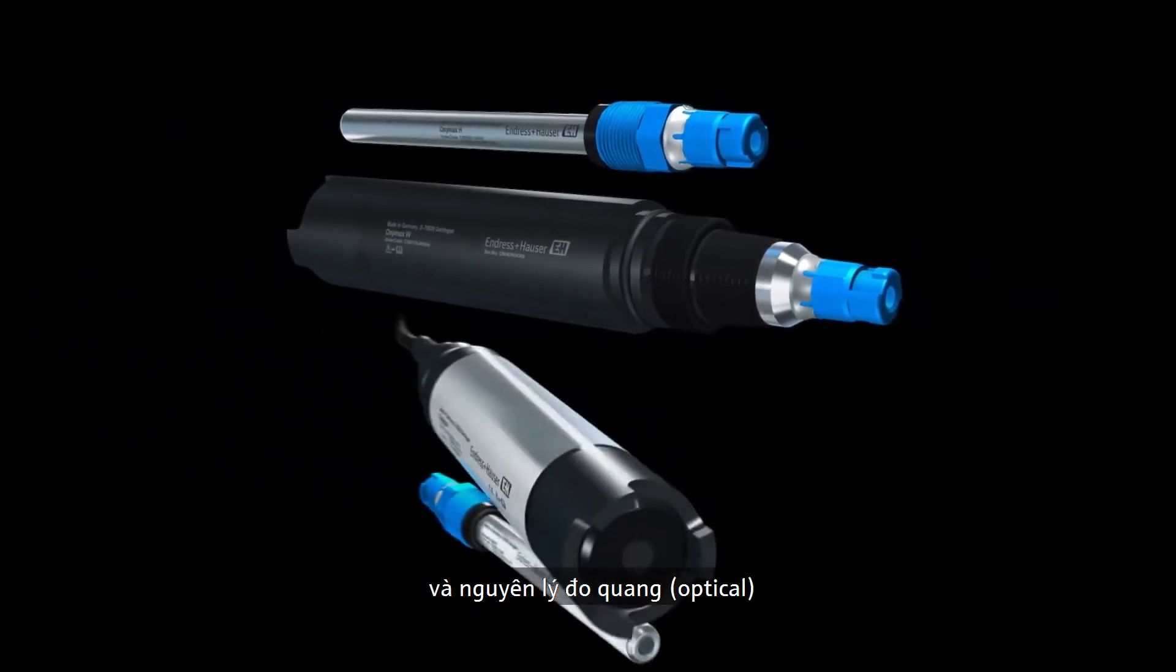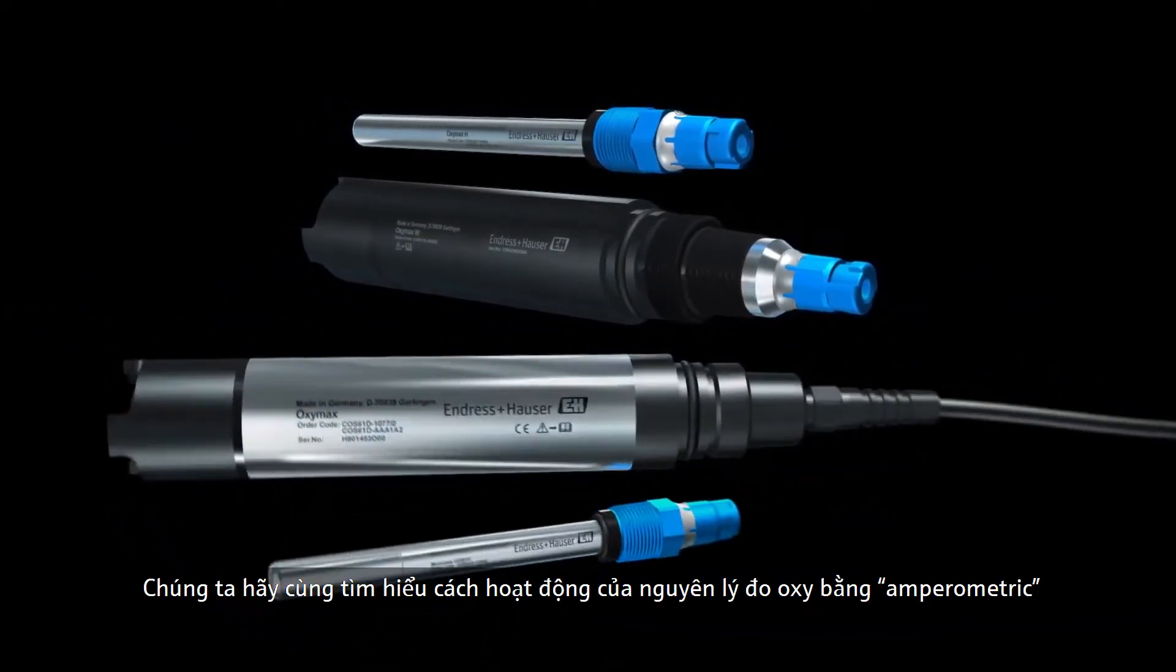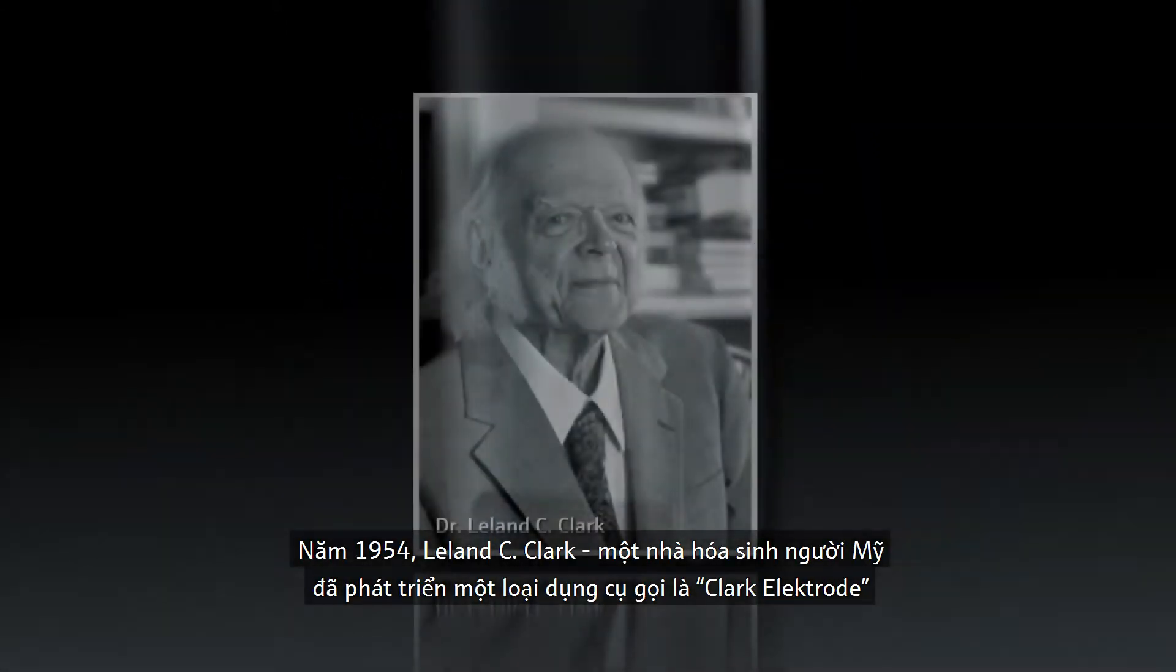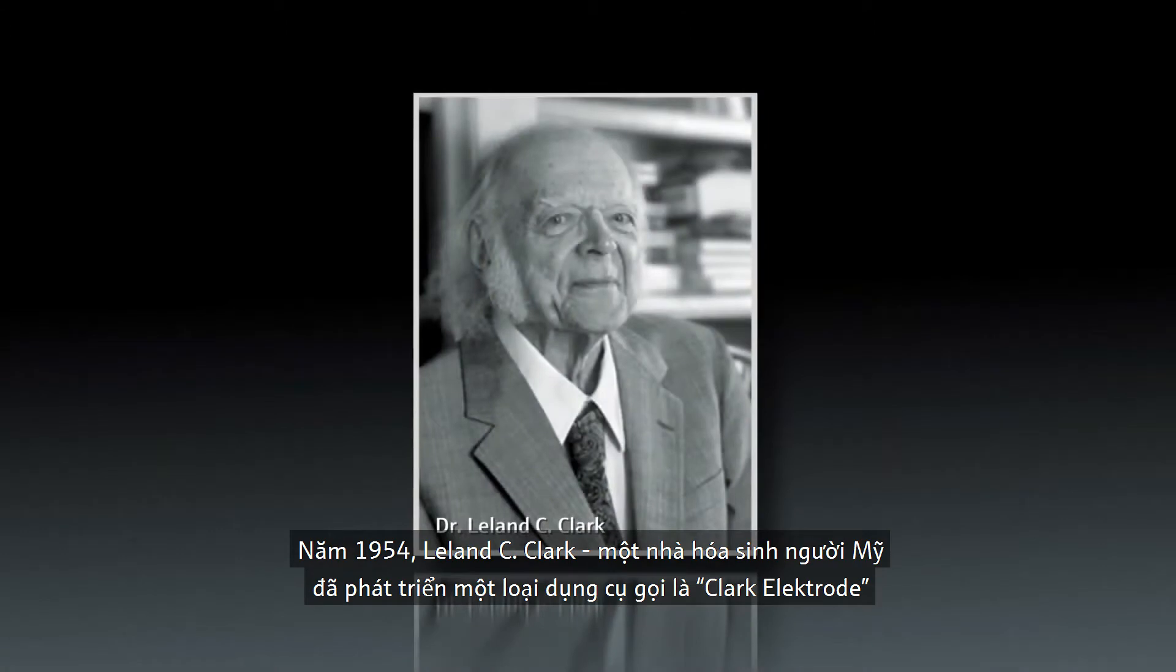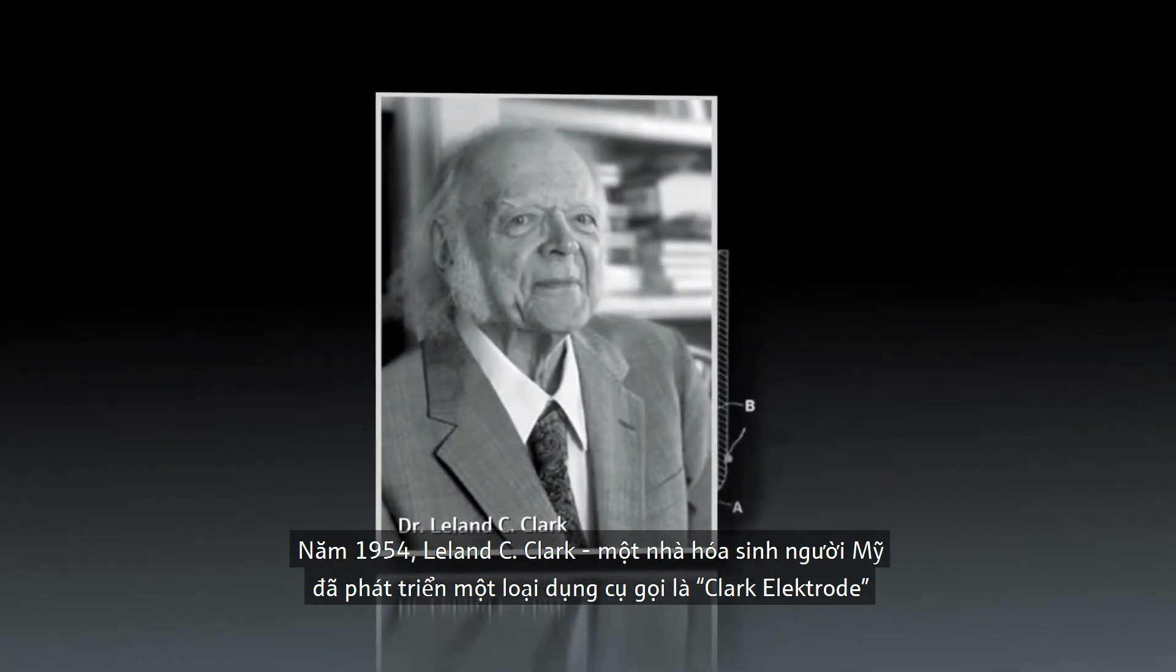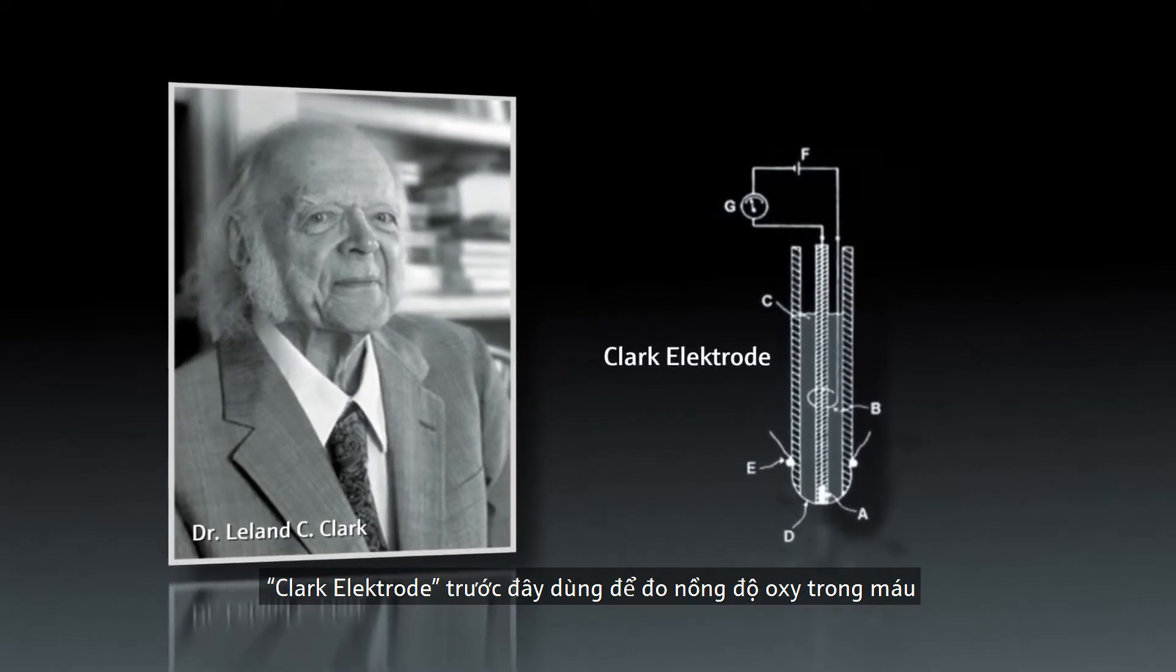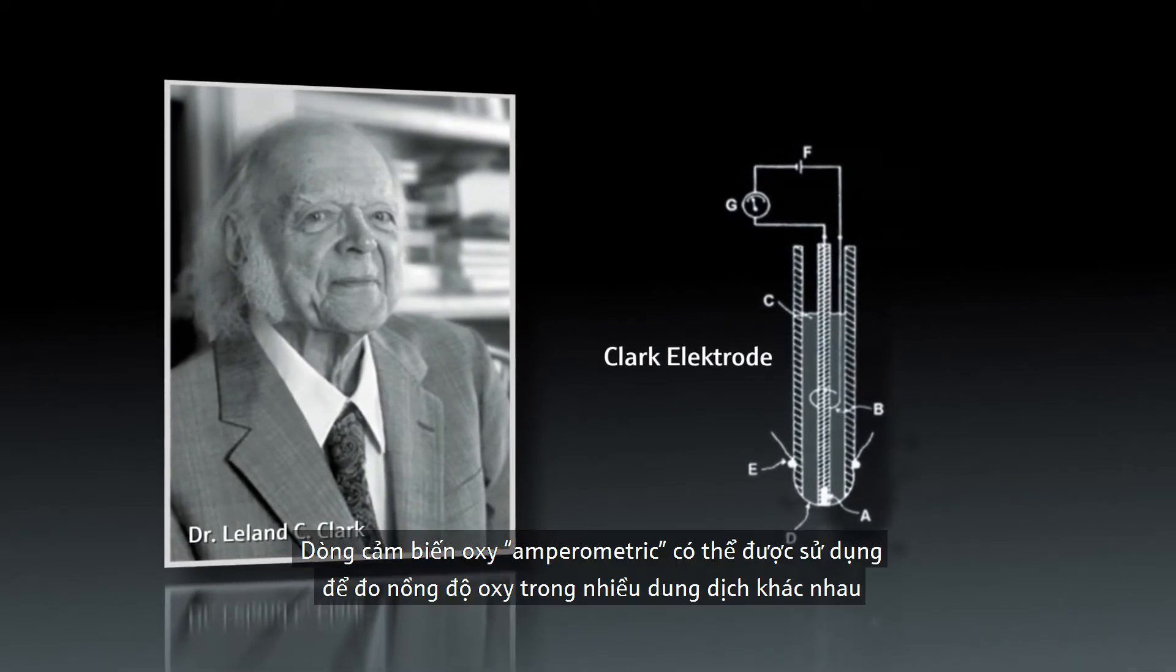Let's take a look at how the amperometric oxygen measuring principle works. In 1954, Leland C. Clark, an American biochemist, developed the so-called Clark electrode to measure the oxygen concentration in blood. This type of amperometric oxygen sensor can be used to measure the oxygen concentration in many different solutions.